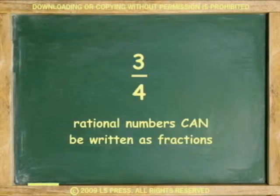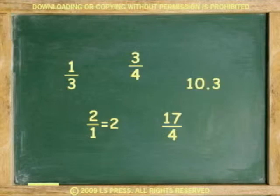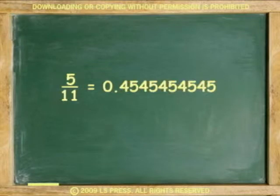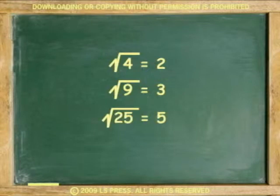A number is rational if it can be written as a ratio of two integers — a fraction. For example, the following are rational numbers: 1/3, 2/1 (or 2), 3/4, 17/4, 10.3. Repeating decimals such as 1/3 = 0.333... and 5/11 = 0.4545... and square roots of perfect squares such as √4, √9, and √25 are also rational numbers.